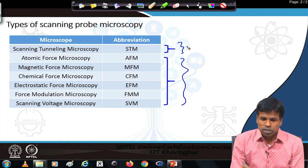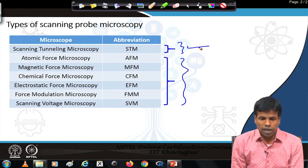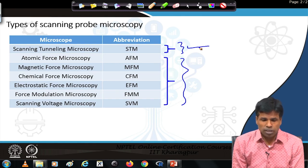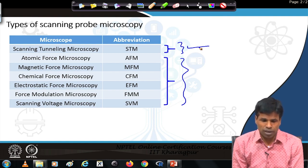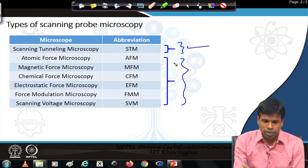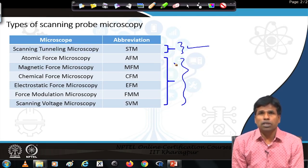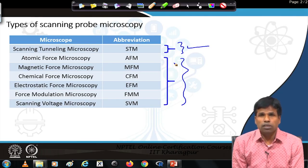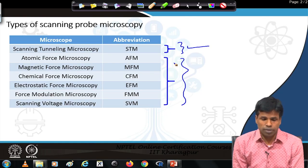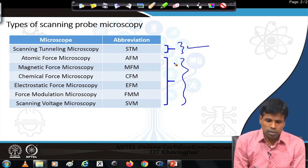Scanning tunneling microscopy is used exclusively to study the very surface of a material with atomic-level resolution. It is mostly done under ultra-high vacuum, though it can also be carried out under liquid or in other environments. It gives very high resolution by measuring the tunneling current at the pico-ampere to nano-ampere level. Other techniques such as atomic force, magnetic force, and chemical force are more widely used and are found in almost all research and university laboratories to study film roughness, thickness, and other surface properties.